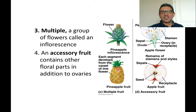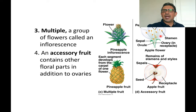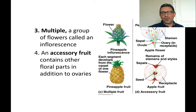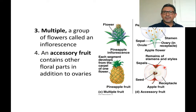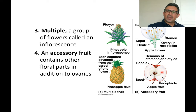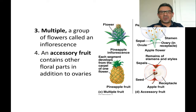Some fruits are accessory fruits, meaning what you eat is not the ovary tissue but the receptacle. In a flower, the petals, sepals, carpels, and stamens are all attached to a tissue called the receptacle. In apples and pears, the receptacle becomes enlarged, fleshy, and sweet — the only ovary tissue remaining is the core, which you throw away along with the seeds inside.